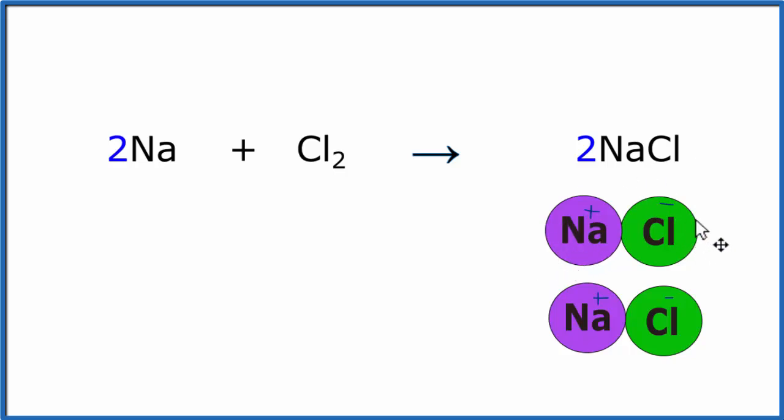Because the chlorine gained an electron, it'll be a little bit larger, and then the sodium, it lost an electron. It actually lost a whole shell, and it will become smaller.